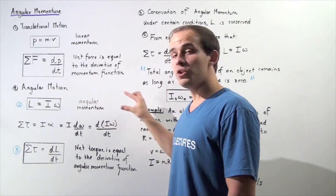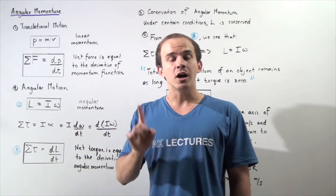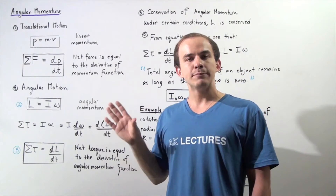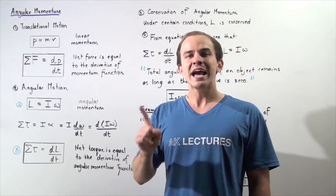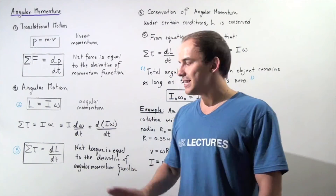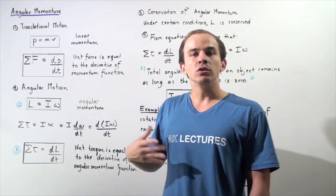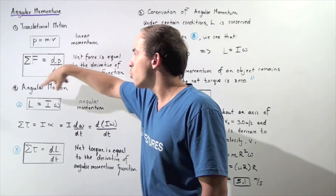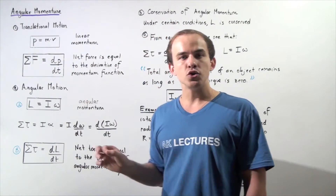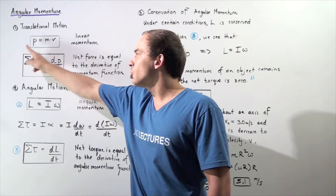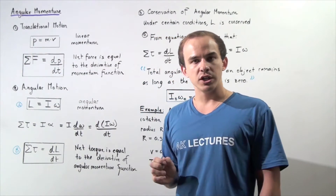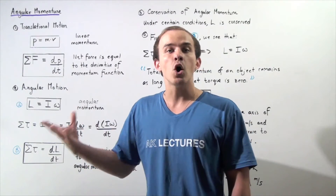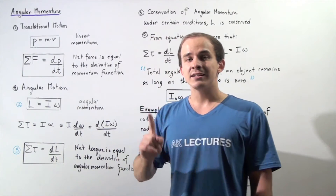Note that this equation only works when the moment of inertia of the object is constant. When the moment of inertia is not constant, we have to use another formula, as we'll see in just a moment. So let's derive the analogous equation for angular motion. Recall that when an object is undergoing translational motion, a net force is required to accelerate that object.